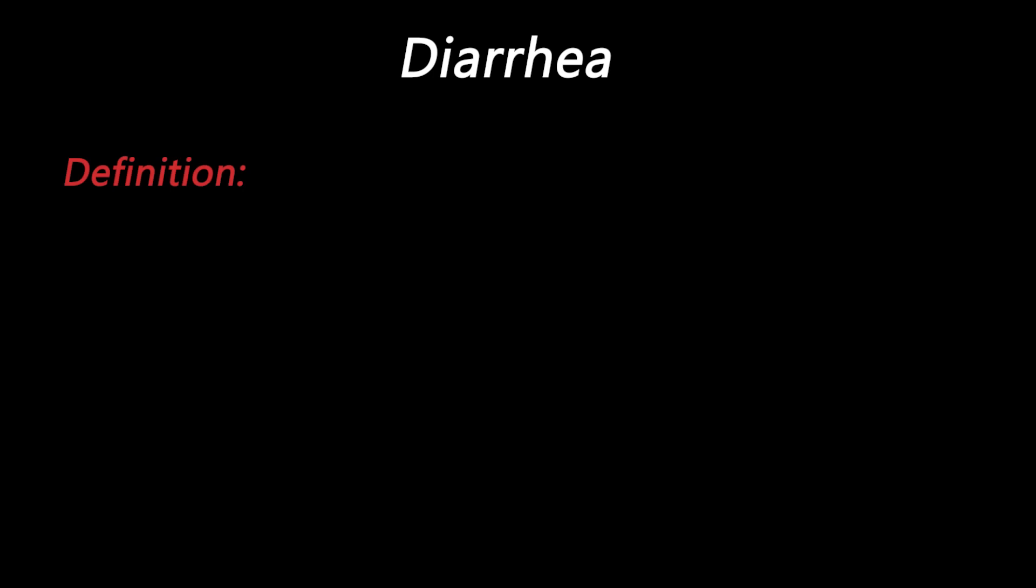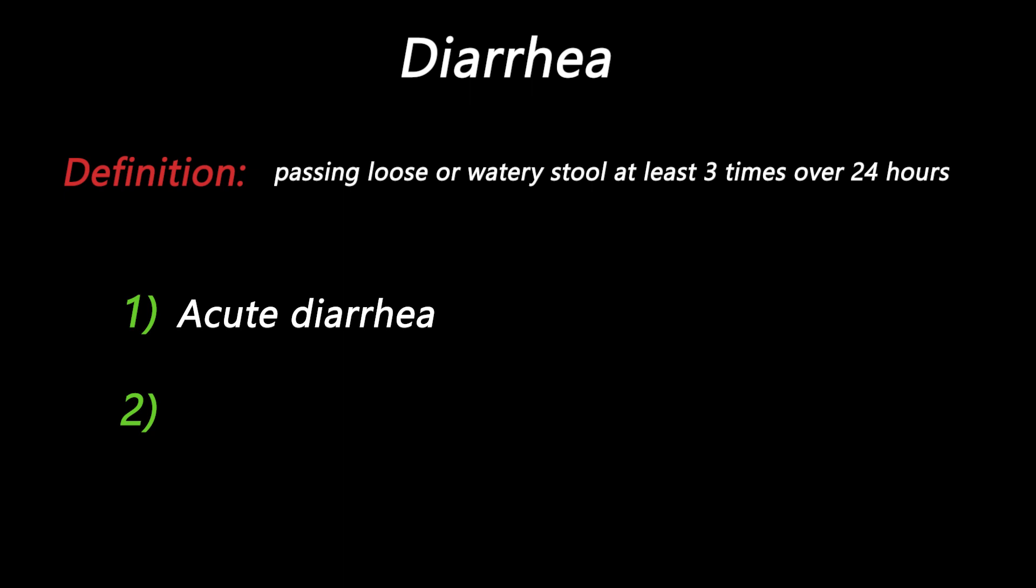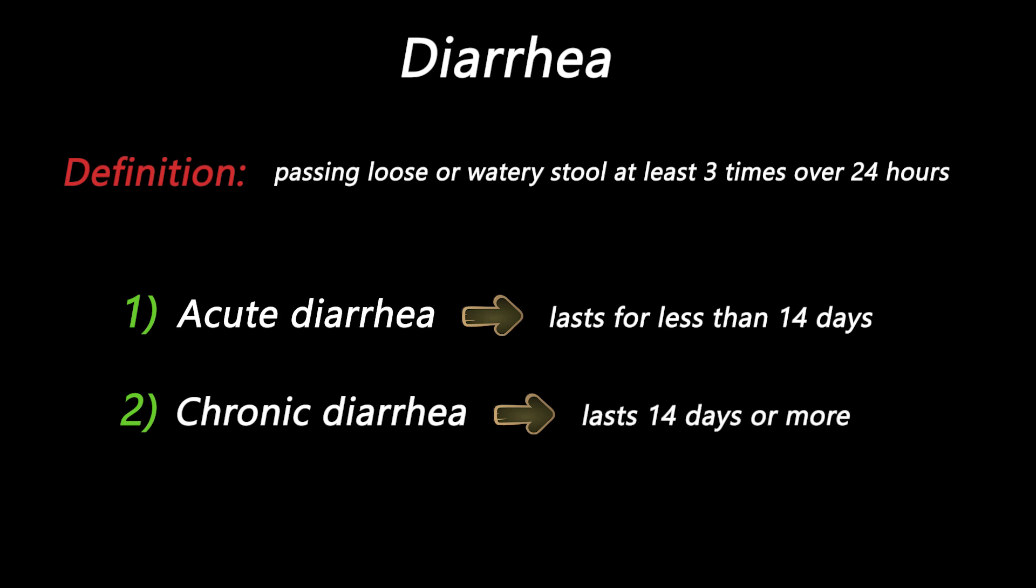Diarrhea is when someone passes looser watery stool at least 3 times over 24 hours. Diarrhea is divided into two main types: acute diarrhea that lasts for less than 14 days, and chronic diarrhea which lasts 14 days or more.